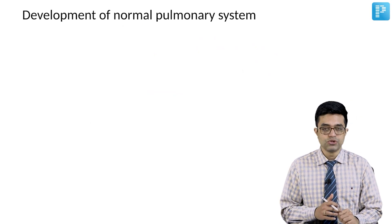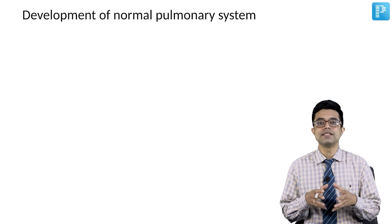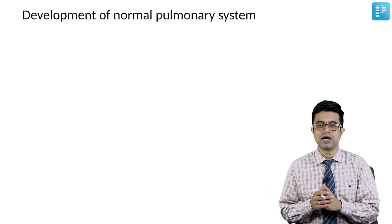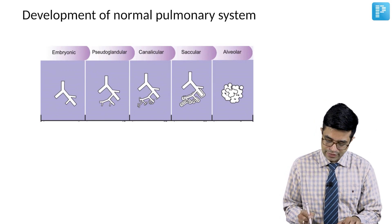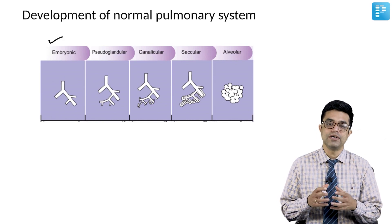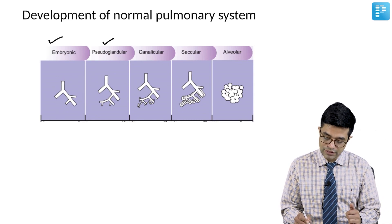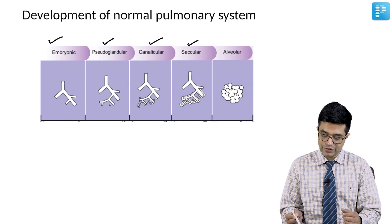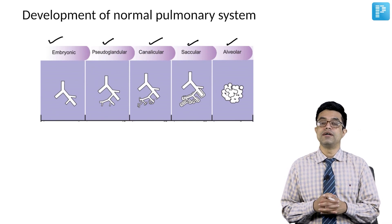The gas exchange segments of the pulmonary system follow this sequence: Initially there is the embryonic stage, where there is simple outpouching and major bronchi tend to form. Then the pseudoglandular phase, where branches arise. Then the canalicular stage, where bronchioles develop. Then the saccular stage, where sacs develop. And finally, the alveolar stage, where alveoli tend to mature.